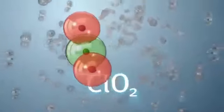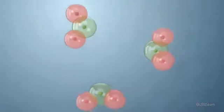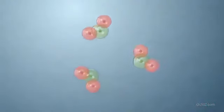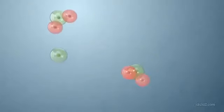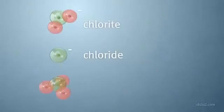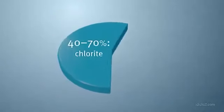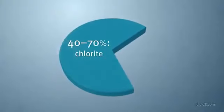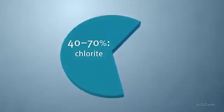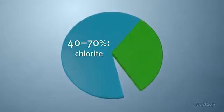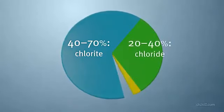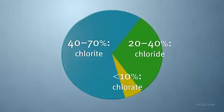Chlorine dioxide doesn't form chlorinated organics like THMs or HAAs. The decomposition byproducts of ClO2 generated by sodium chloride include chloride, chlorite, and chlorate ions. Depending on the water makeup, approximately 40 to 70 percent of the applied ClO2 dosage will revert to chloride ions. 20 to 40 percent of the applied dosage will convert to chlorite, and less than 10 percent of the applied ClO2 will convert to chlorate ions.